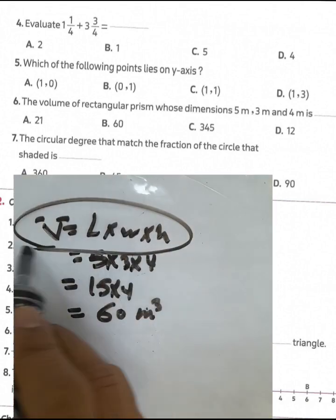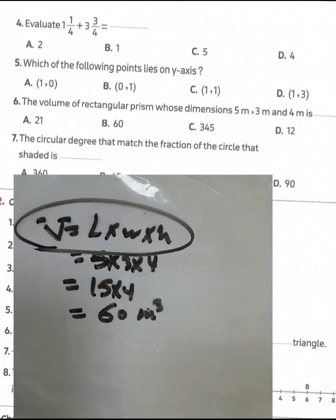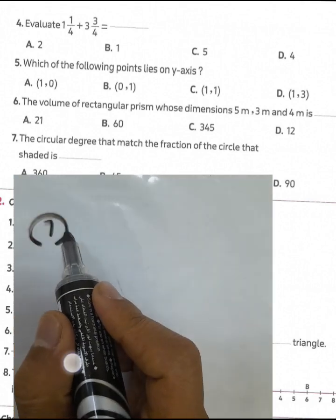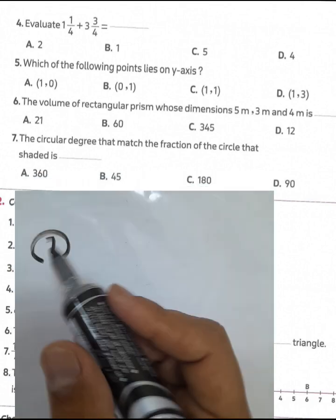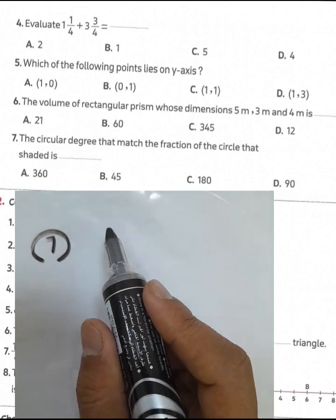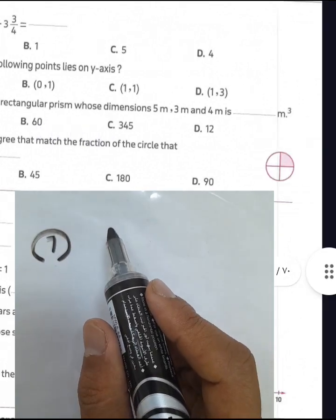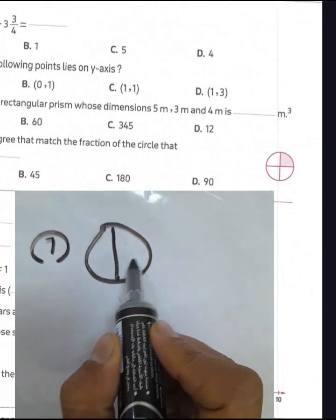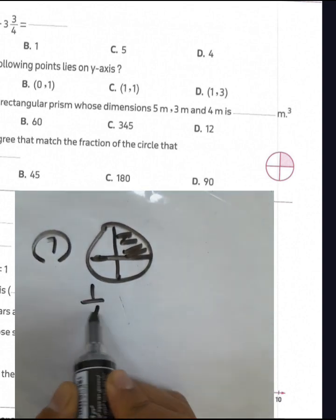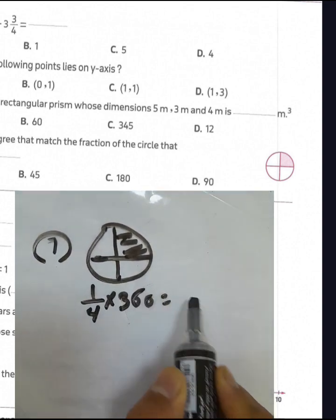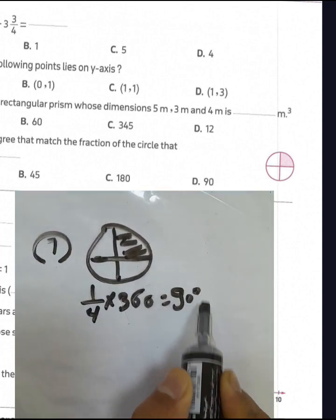The volume here is 60 cubic meters. Question number 7: the circular degrees that match the fraction of the circular shaded part. We have one quarter of the area of the circle. One quarter of 360 degrees will be 90 degrees.